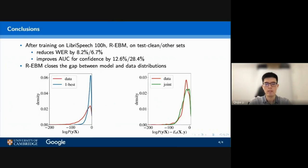We trained the R-EBM on the LibriSpeech 100-hour dataset. Results on test-clean and test-other sets show that the word error rates are reduced by 8.2% and 6.7%. The area under the curve as the confidence metric is improved by 12.6% and 28.4%.